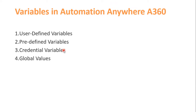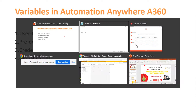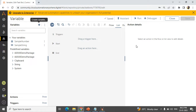The next part is variables in Automation Anywhere A360. We have four different types: user defined variable, predefined variable, credential variables, and global values. We will see them one by one. To understand user defined variable, we will go directly to our Automation Anywhere workbench.